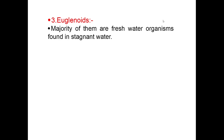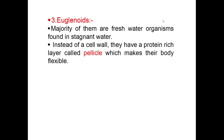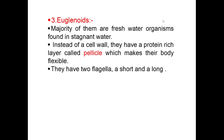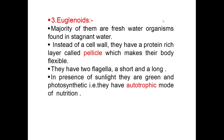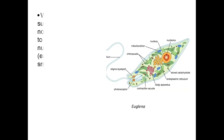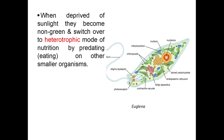Euglenoids: the majority of them are freshwater organisms found in stagnant water. Instead of a cell wall, they have a protein-rich layer called pellicle, which makes their body flexible. They have two flagella — a short and a long one. In the presence of sunlight, they are green and photosynthetic, meaning they have an autotrophic mode of nutrition. When deprived of sunlight, they become non-green and switch over to a heterotrophic mode of nutrition by predating on other smaller organisms.